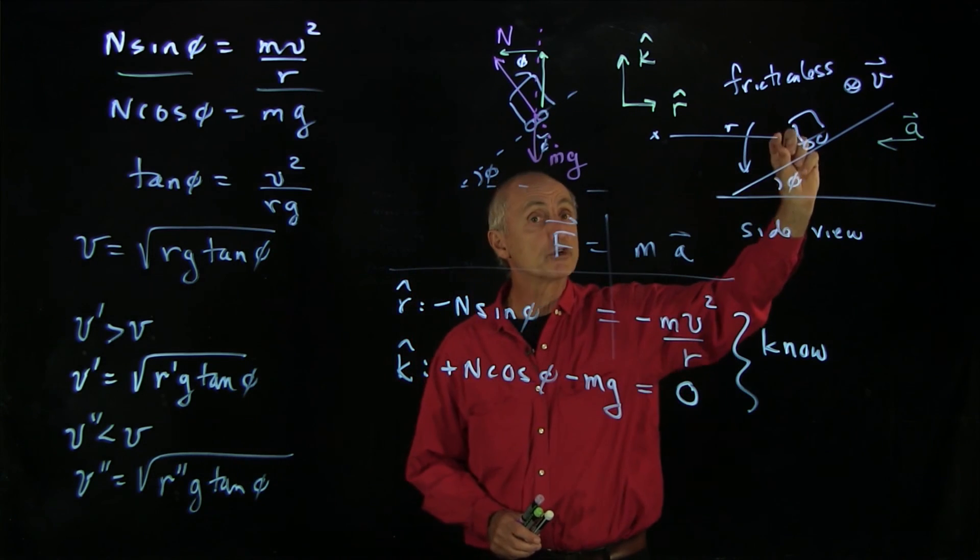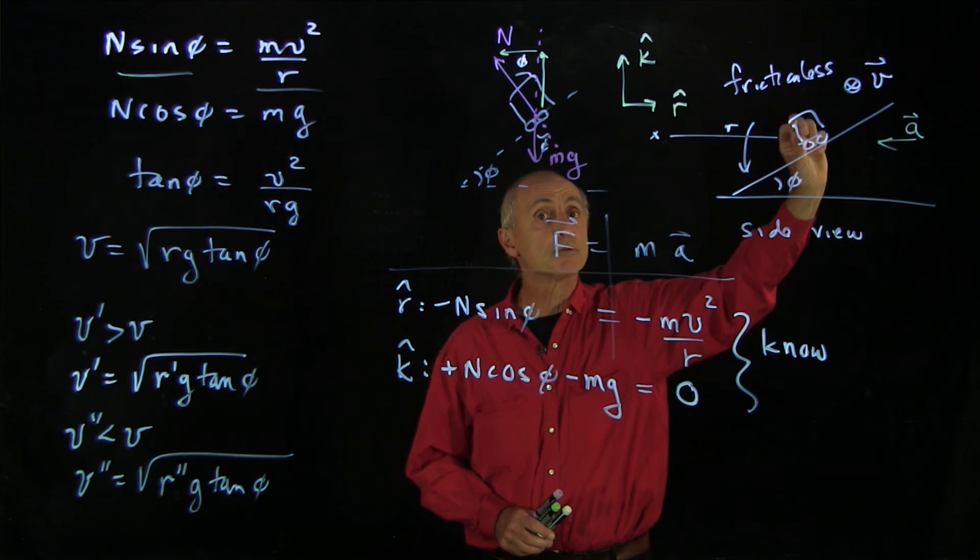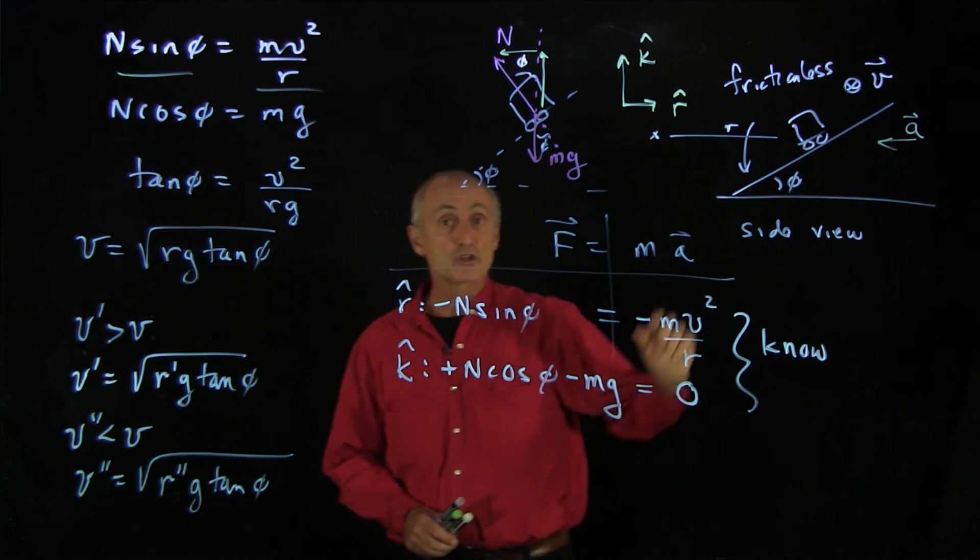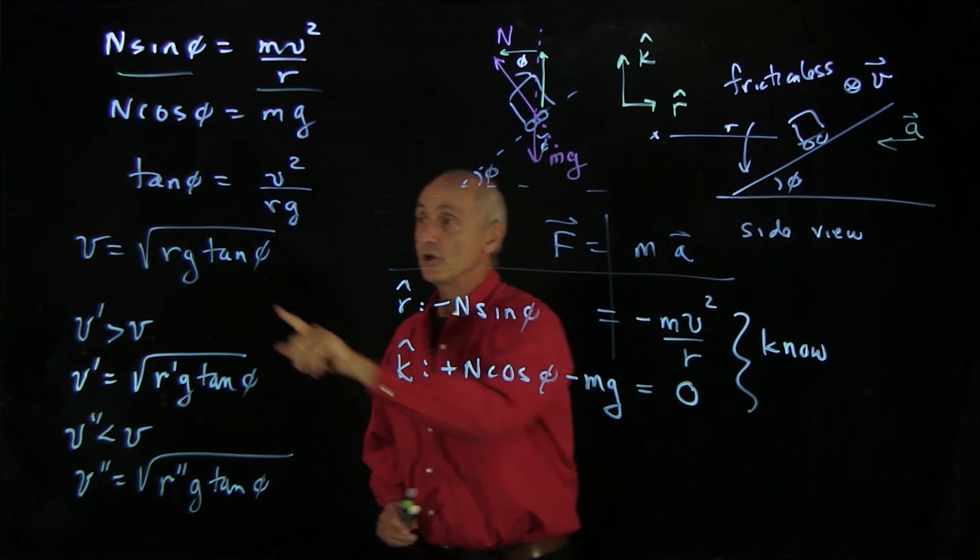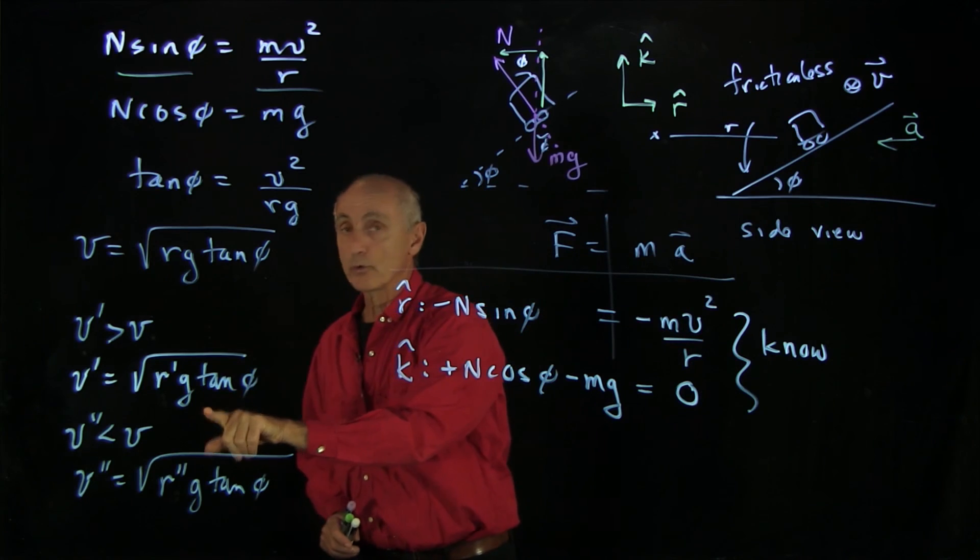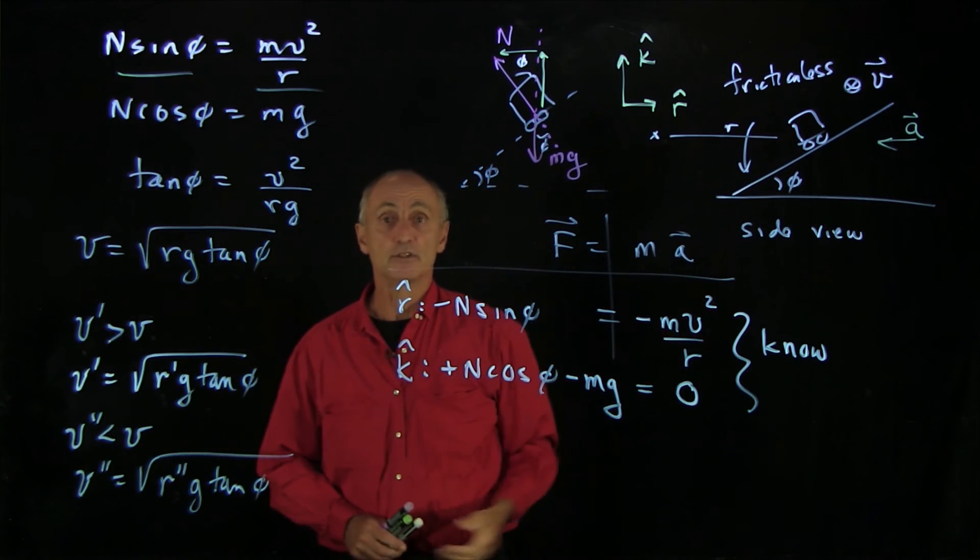It turns out that it will overshoot that a little bit and then start to move up. And again, it will oscillate around this new equilibrium length. So on a frictionless inclined plane, if you go faster than the speed, the car slides up. If you go slower than the speed, the car slides down.